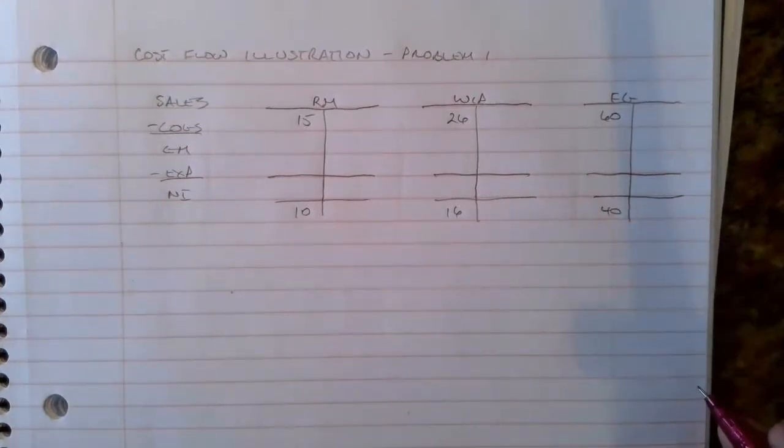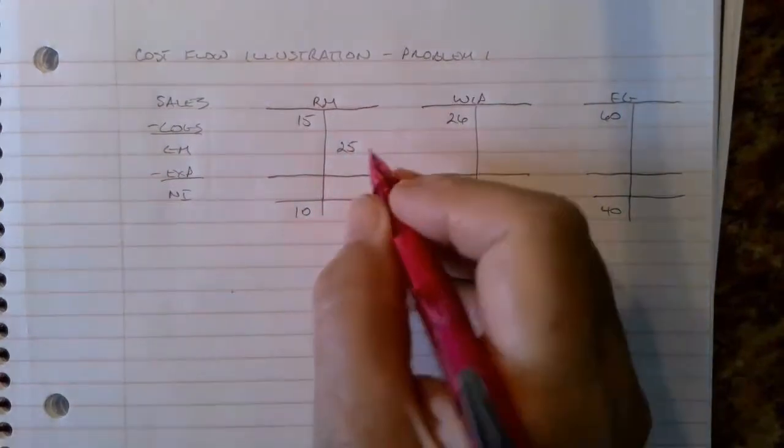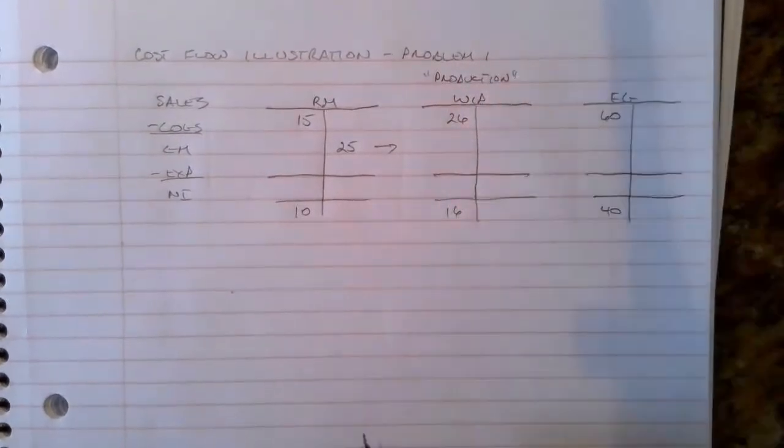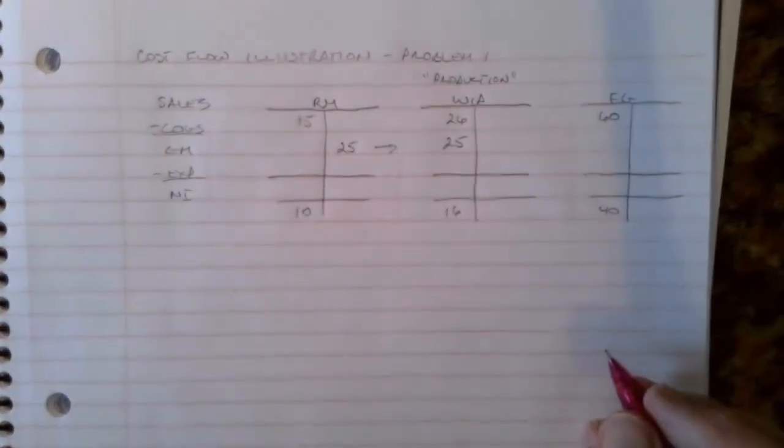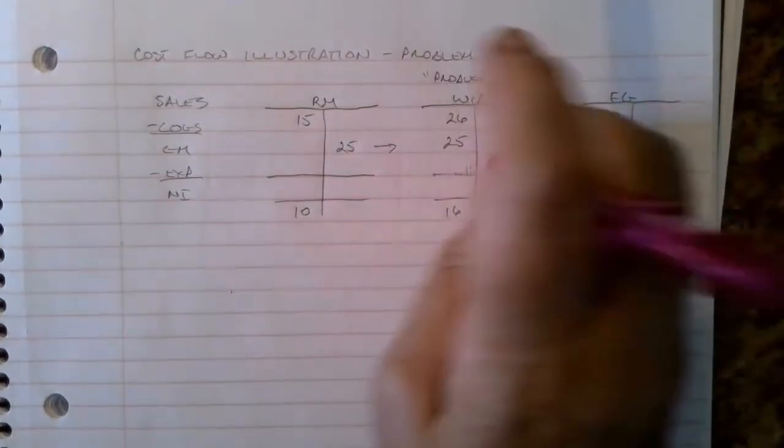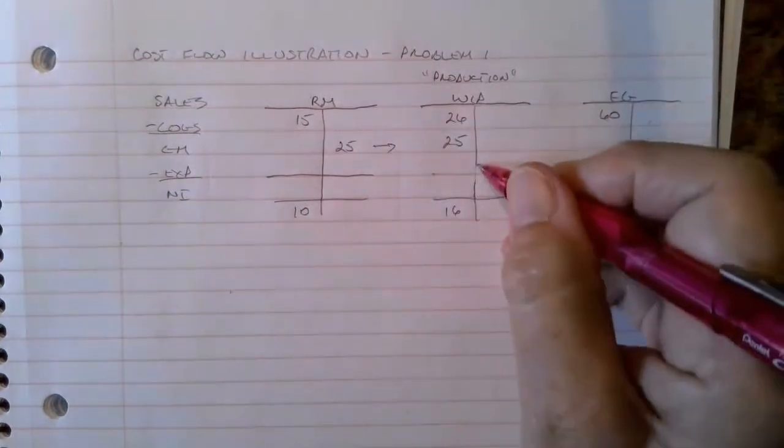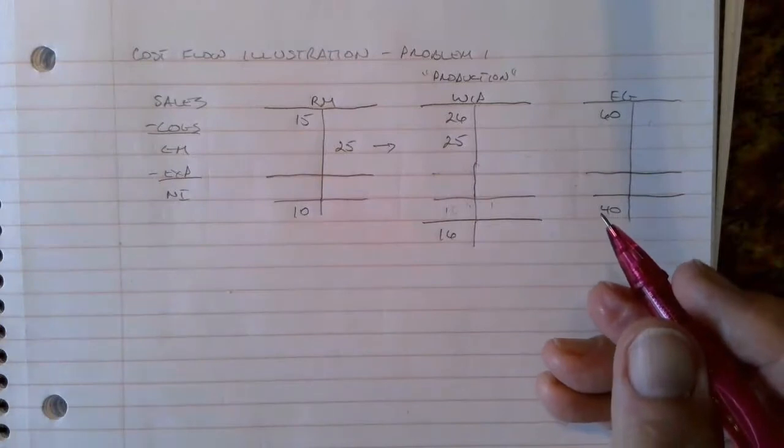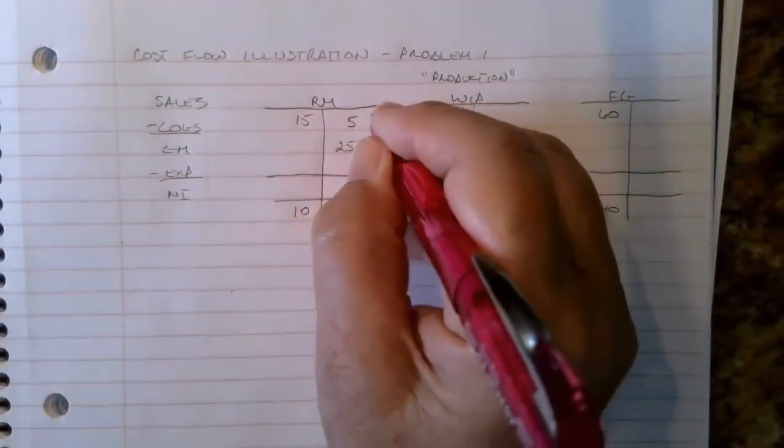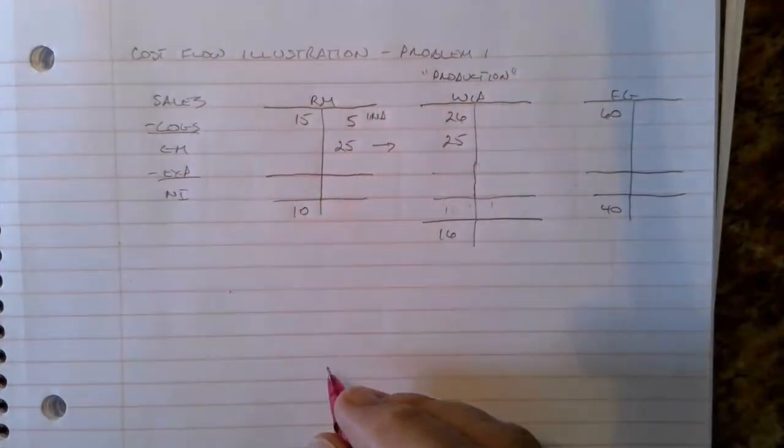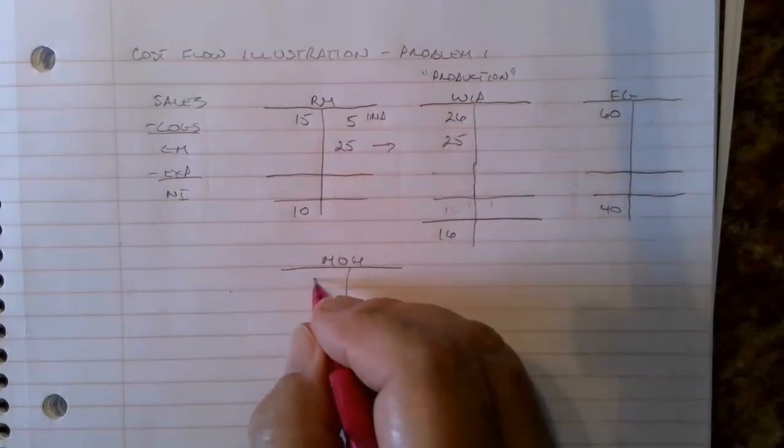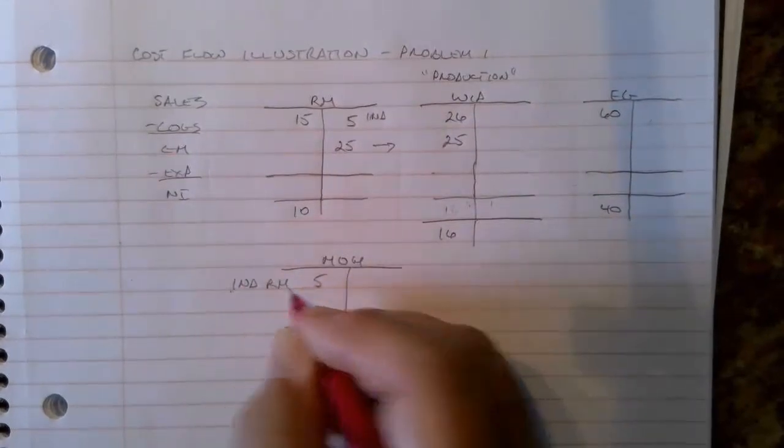So let's see what else we know. They told us that issued to production, direct materials issued to production were twenty-five dollars. So that went into production. Think of work in process as really production. So twenty-five dollars came in here. Indirect materials were five dollars. That were issued to production, so that means they went in a manufacturing overhead T account. So this five dollars is overhead for indirect materials, indirect raw materials.